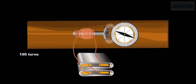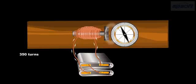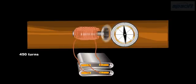As the number of turns is increased, the strength of the magnetic field also increases. This is the reason why on doing the experiment with the compass, the deflection of the compass becomes more and more as the number of turns of the coil increases.